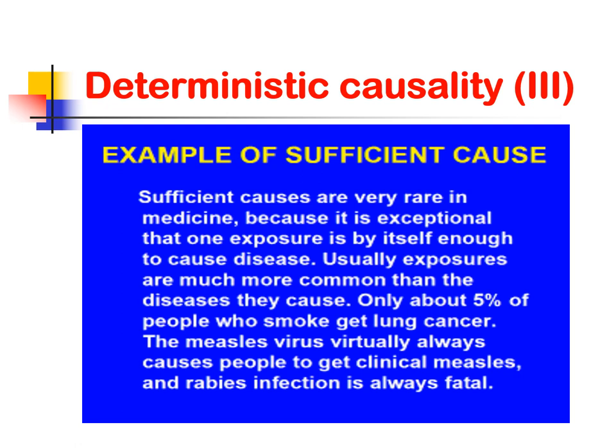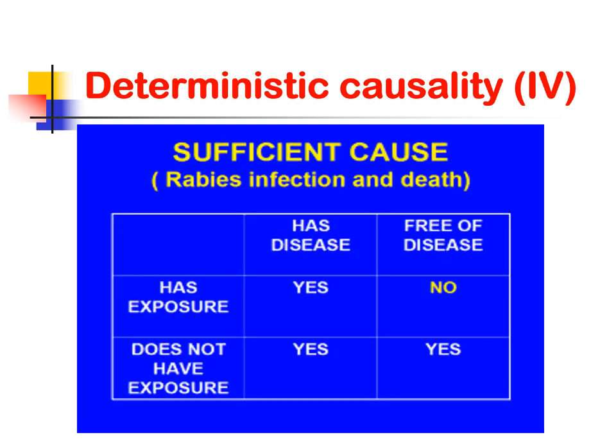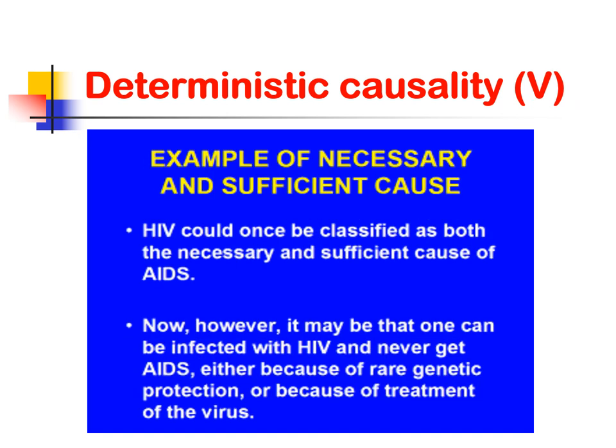For sufficient causes: sufficient causes are very rare in medicine because it is exceptional that one exposure is by itself enough to cause disease. Usually, exposures are much more common than the diseases they cause — only about 5% of people who smoke get lung cancer. However, the measles virus virtually always causes people to get clinical measles, and rabies infection is always fatal. For a sufficient cause, having the exposure means having the disease; free of disease means no exposure. This illustrates the difference between necessary and sufficient causes.